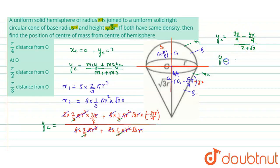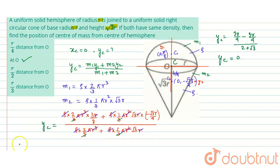The numerator cancels out to zero, so yc = 0. This means the common center of mass lies at the origin O, which is the center of the hemisphere. The position of the center of mass from the center of the hemisphere is zero — it lies at the center of the hemisphere itself.